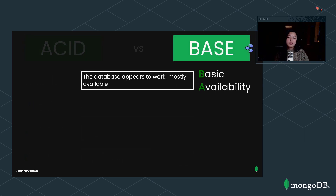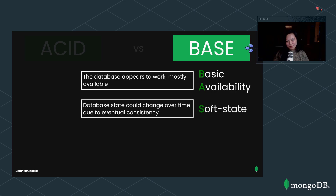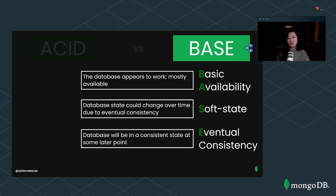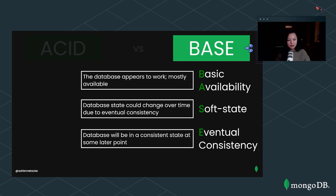BASE: the BA stands for basic availability — the database appears to be available most of the time. S stands for soft state, meaning the database state could change over time. And E stands for eventual consistency — the database will be at a consistent state at some later point. These are much less rigid than the ACID properties and have been used in conjunction with NoSQL databases.